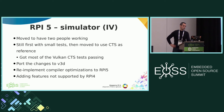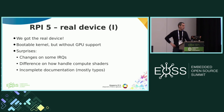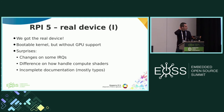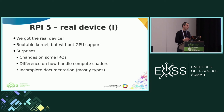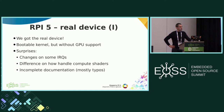And most importantly, we finally got the real device. What we received was a kernel that was working and bootable — so you have the Raspberry Pi 5, you connect it, it boots, and you can compile all the libraries. But it didn't have GPU support in the kernel, so the first thing we needed to do was provide that GPU support in the kernel.